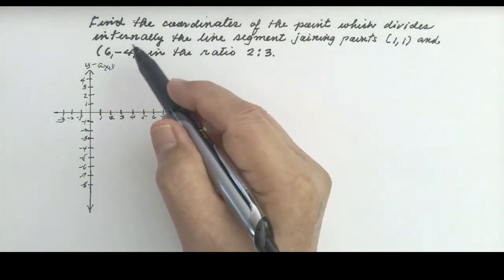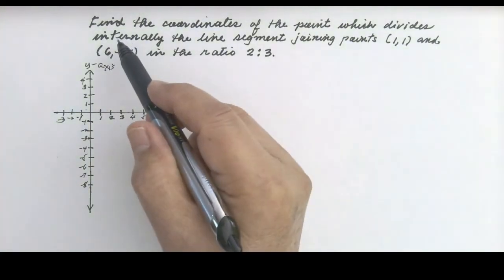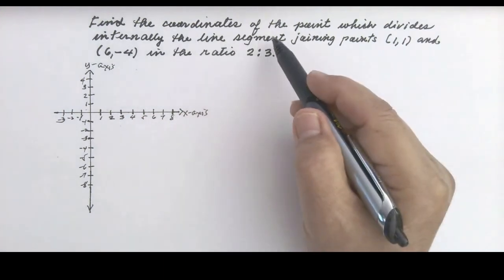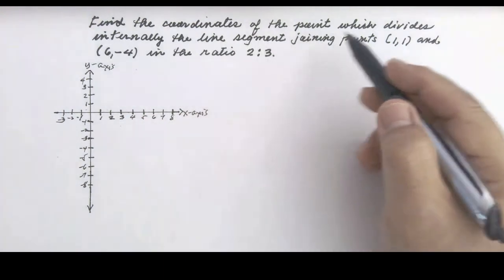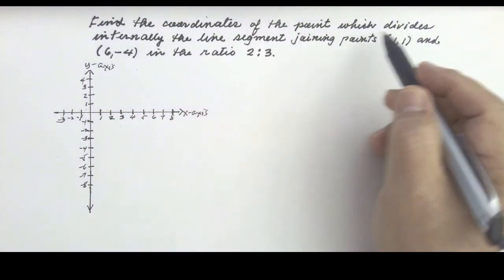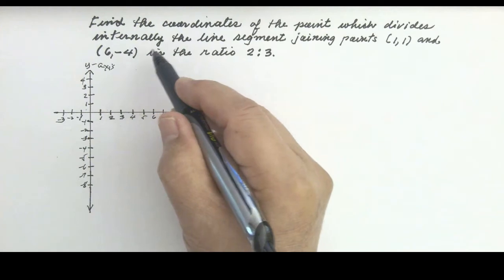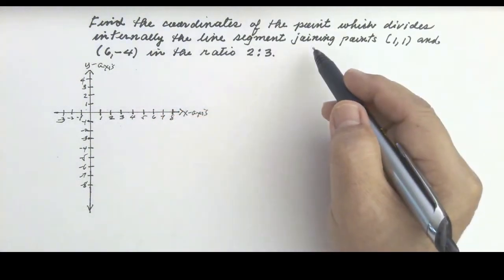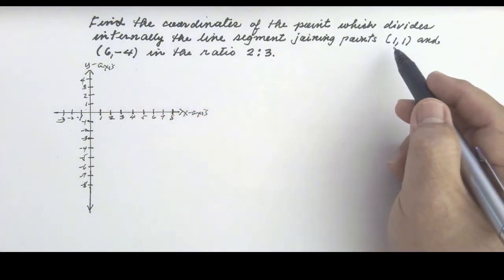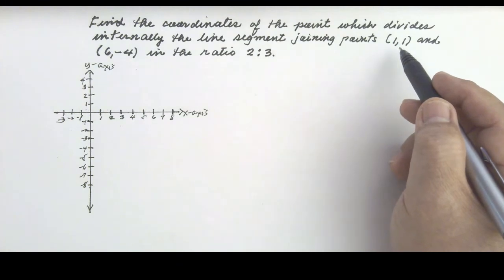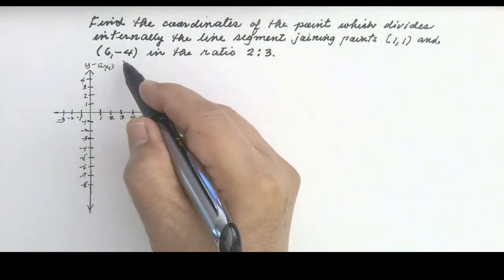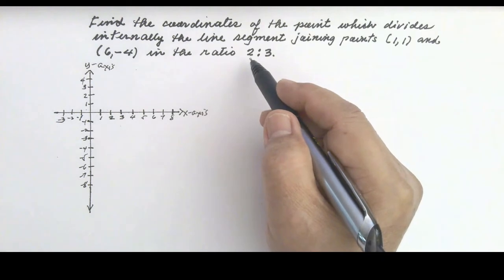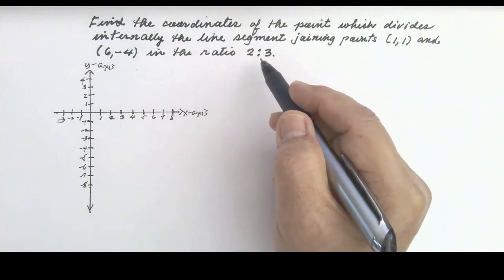Let us solve this problem. Find the coordinates of the point which divides internally the line segment joining points (1, 1) and (6, -4) in the ratio 2 is to 3.